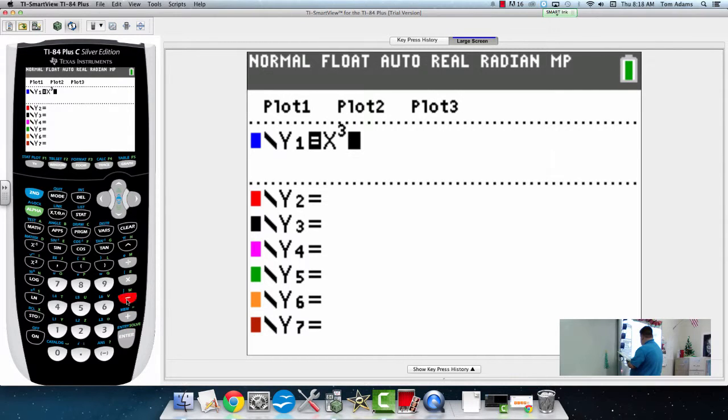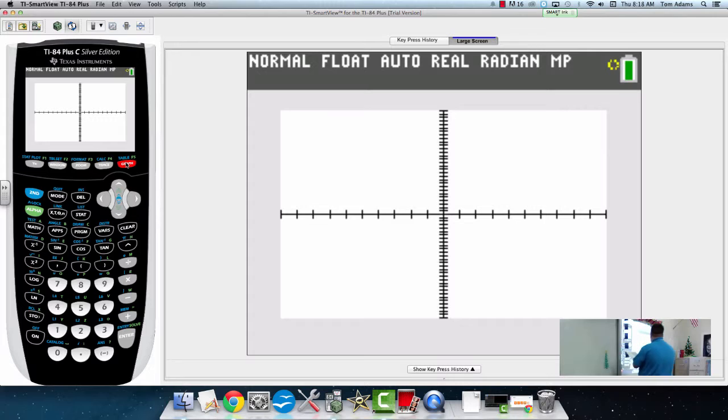Minus 6x squared, right? Plus 8x minus 2.